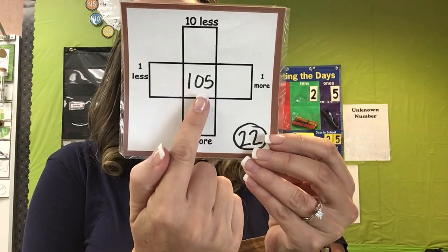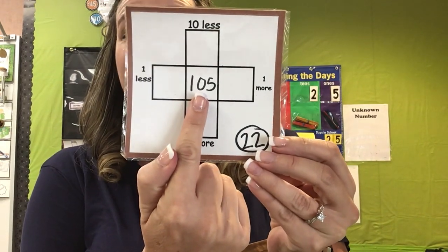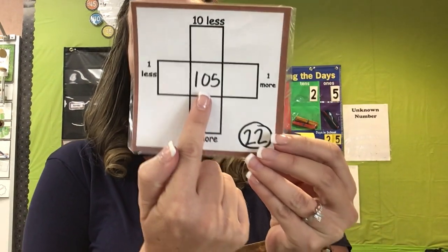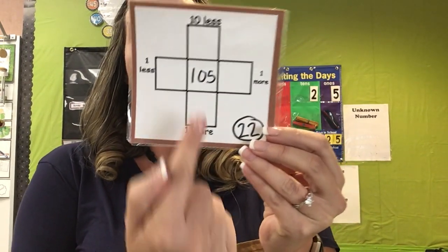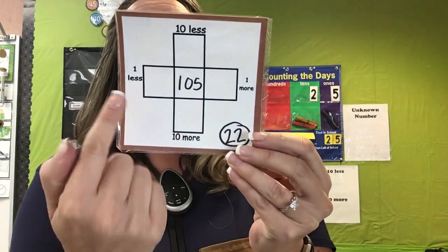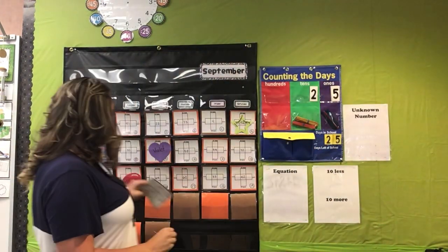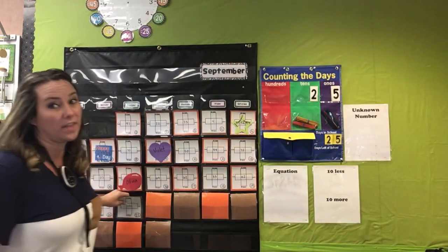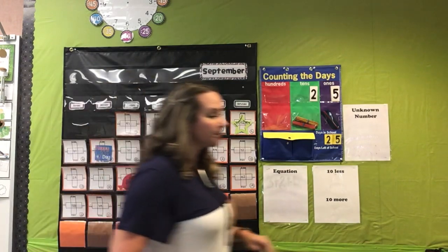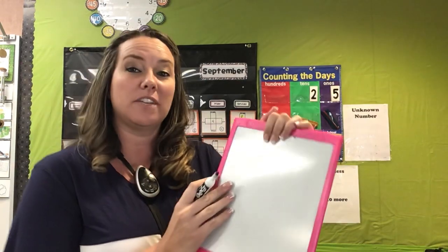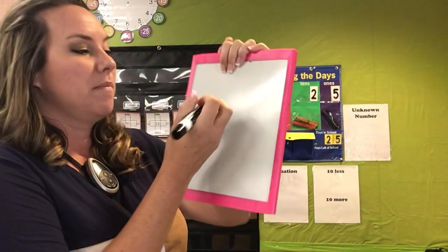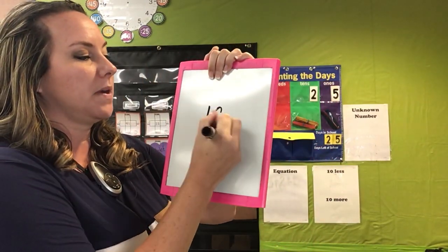We have the number — oh my goodness — 105. And we're gonna do 10 more, 10 less, one more and one less. It's a good thing that you have your 120s chart because it has all the answers on there. Or if you would like to just count 10 sticks with me, you can do that. It's gonna be a little bit more difficult today because we have a three-digit number.